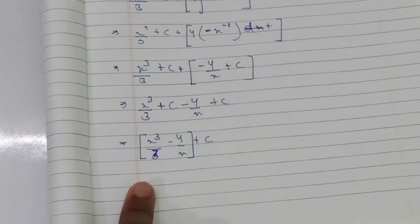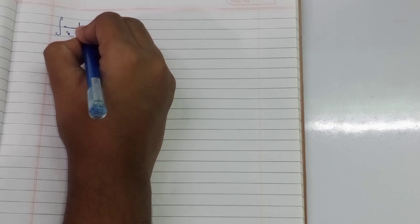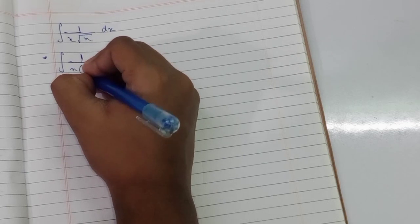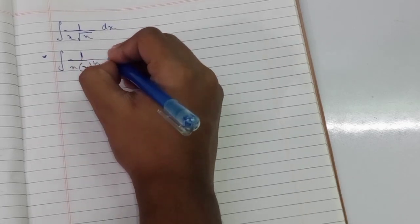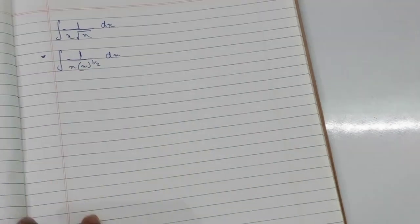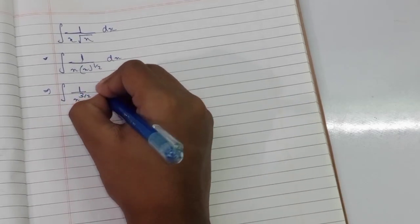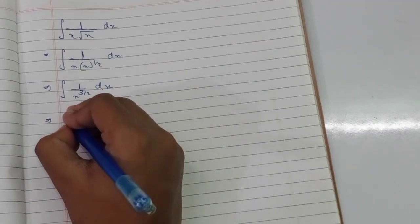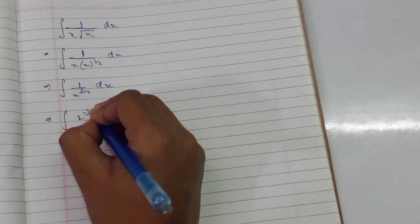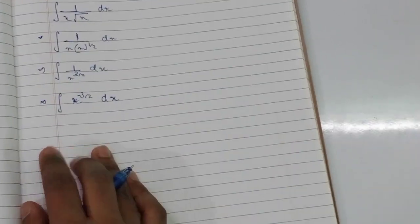Our last question is the integral of 1 over (x times the square root of x) dx. We rewrite this as 1 over x times x to the power 1/2. Since the bases are the same we apply the laws of exponents: x times x^(1/2) equals x^(3/2). So the integral becomes x to the power minus 3/2 dx.